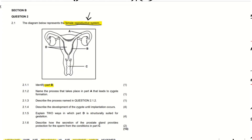The first question says we should identify Part B. If we look at Part B, it's referring to this area that is sort of gray here. We can see that this area is actually associated with the uterus. Remember, the uterus is this whole organ here. So Part B is the wall of the uterus, and the wall of the uterus is known as the endometrium. So Part B is showing us the endometrium.